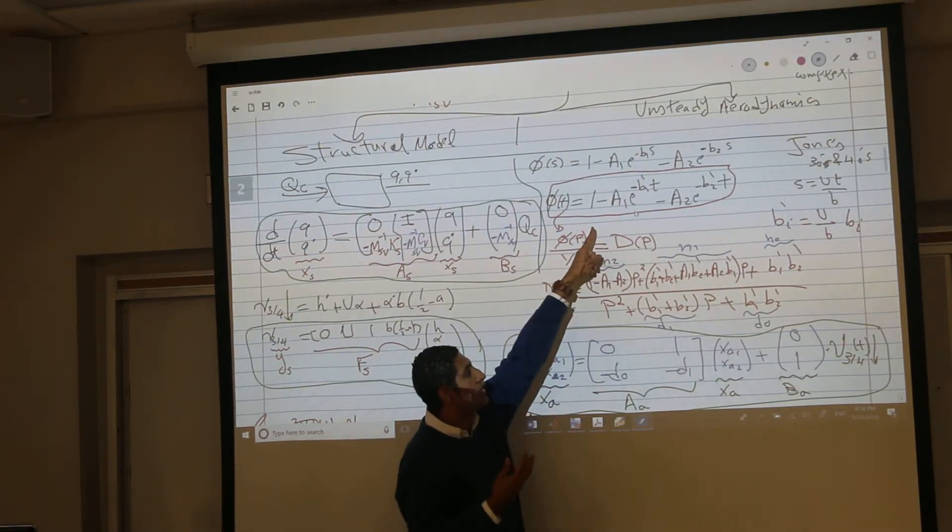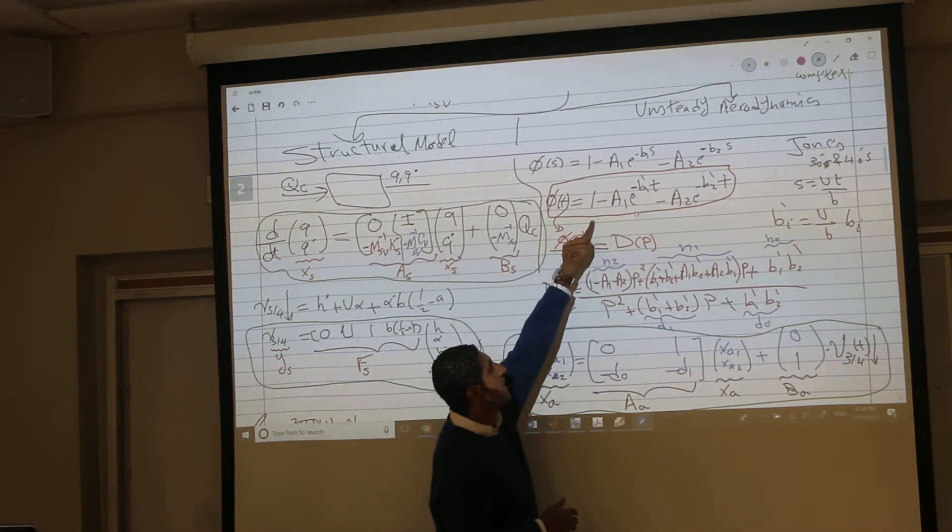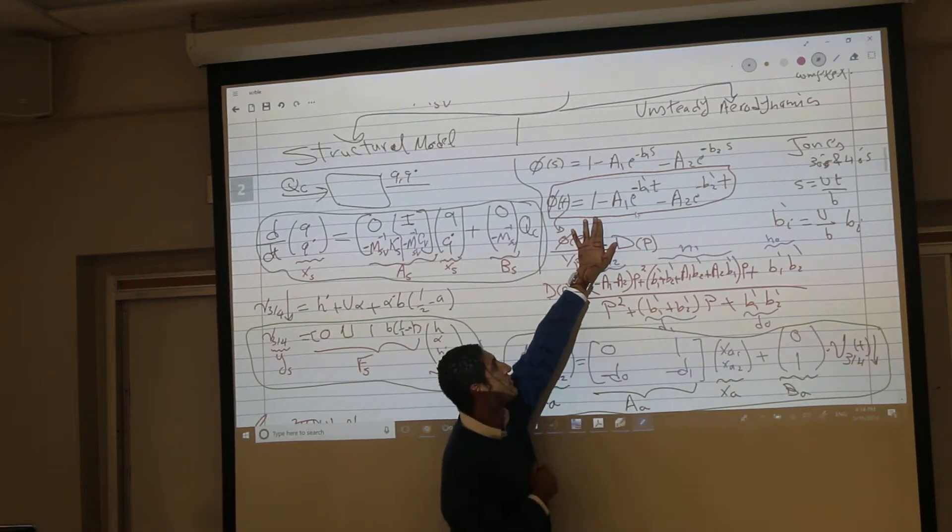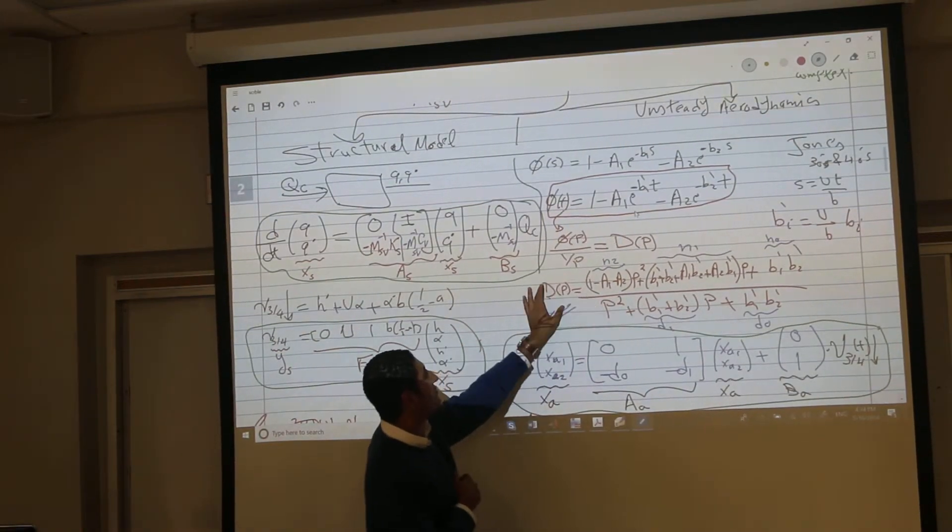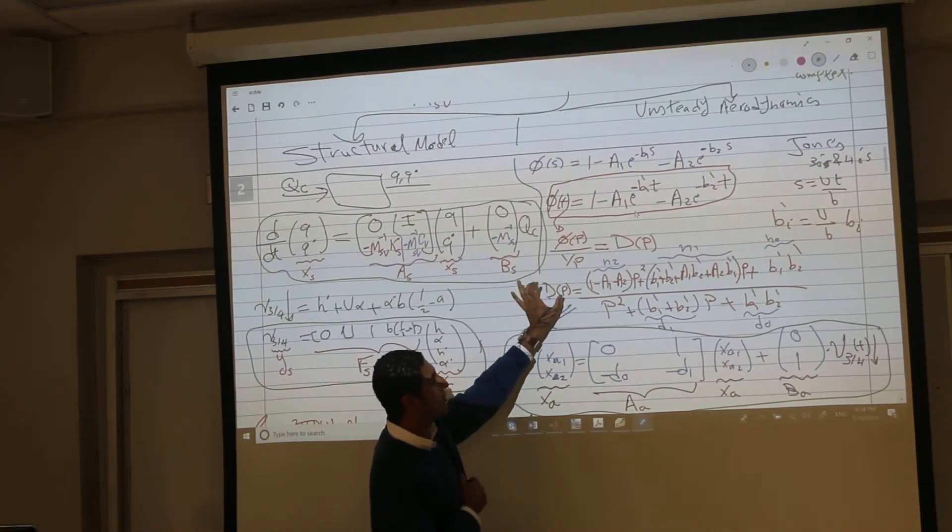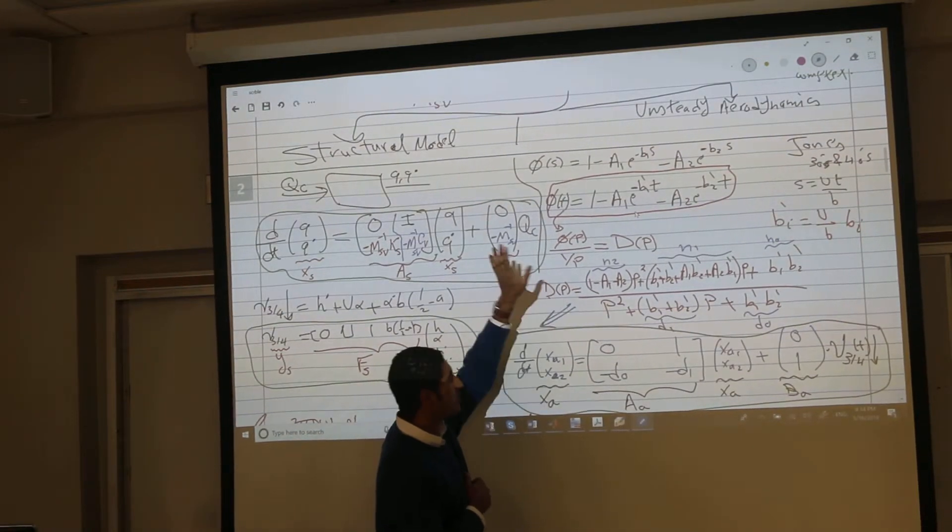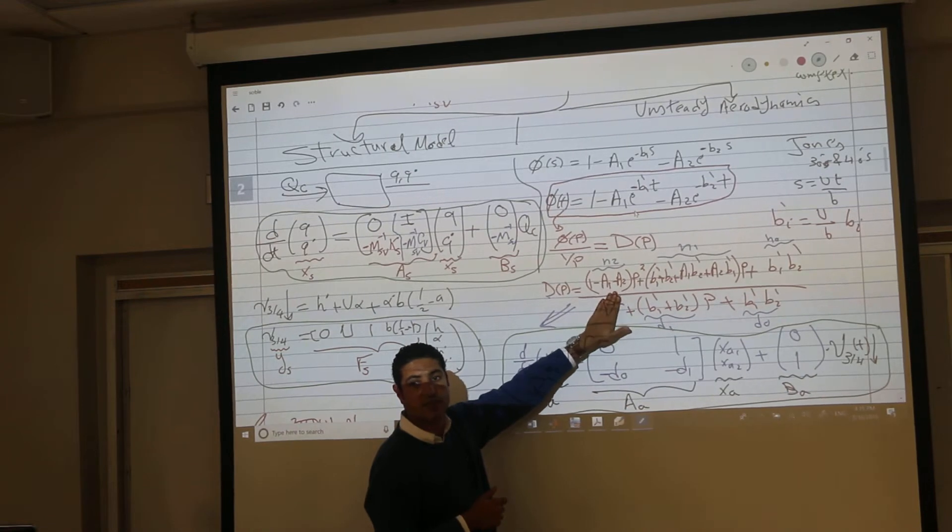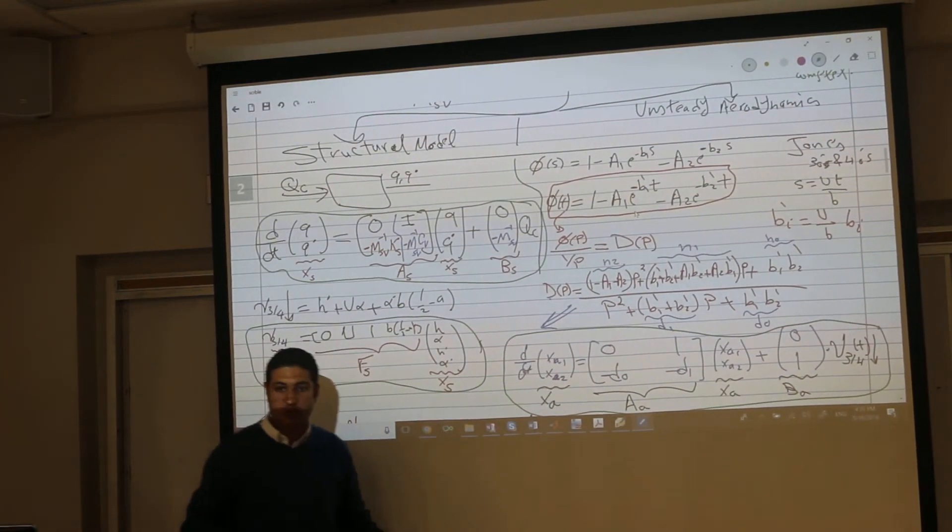This is the benefit of the state space model. From this guy, this animal is only valid during the transient. You're very correct. But we derived the very generic operating transfer function. Now, this is applicable to any type of input, not necessarily step.